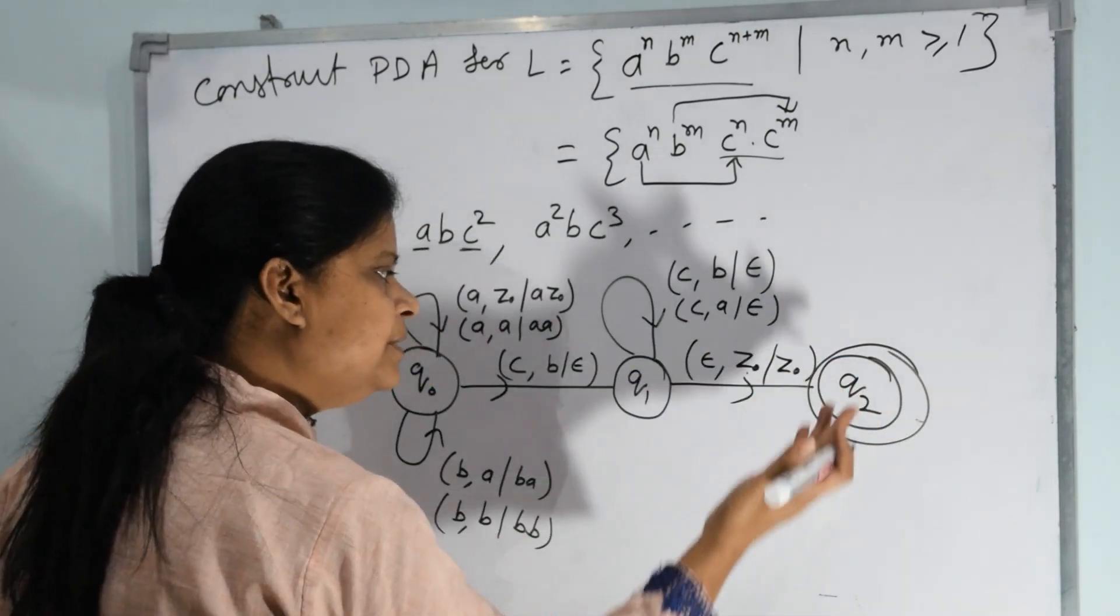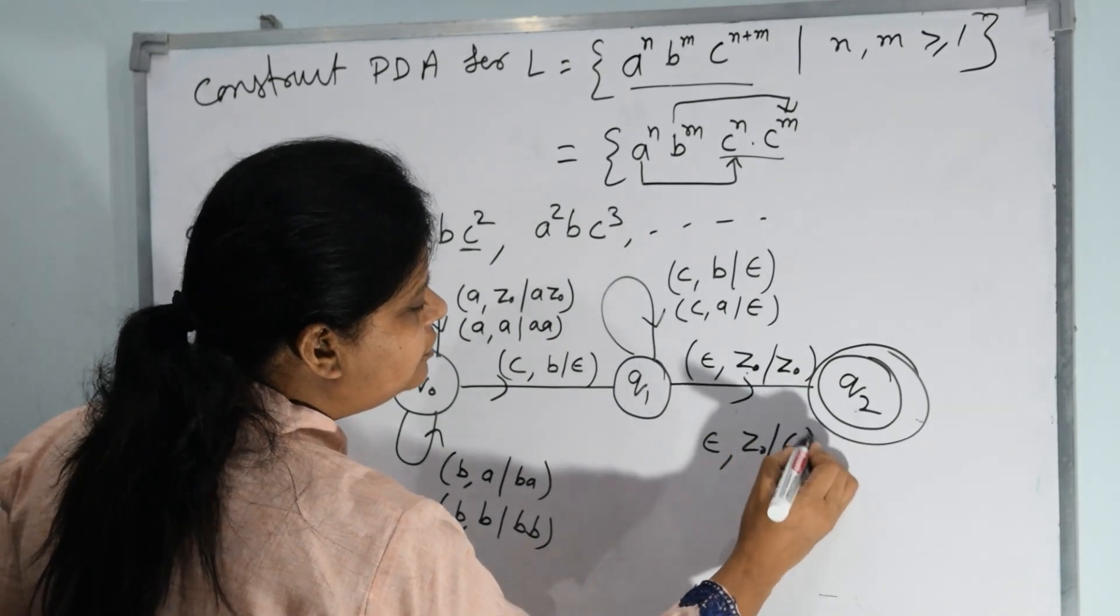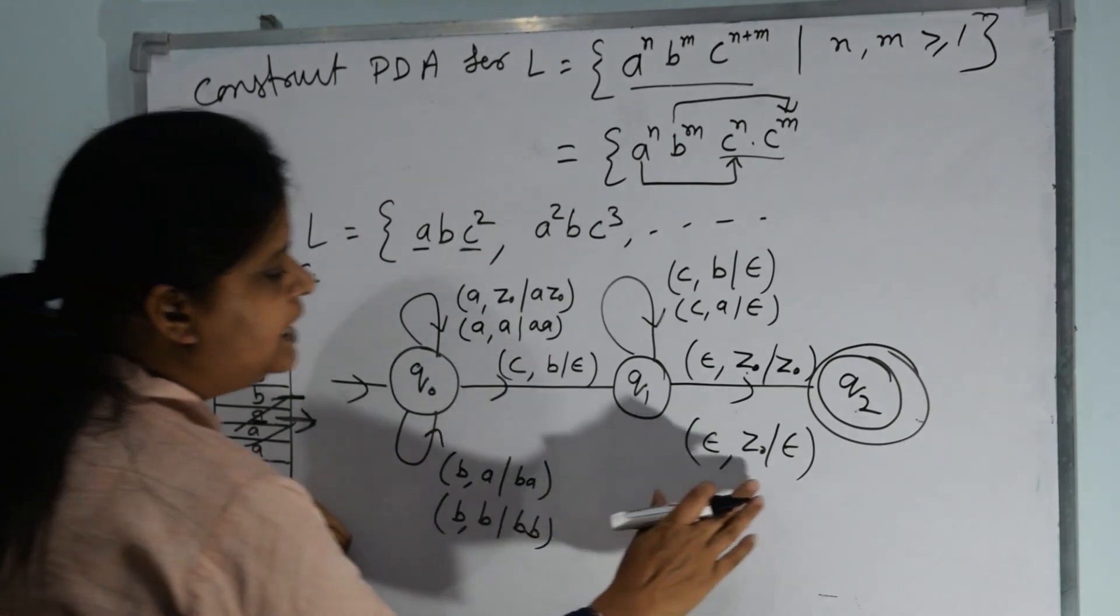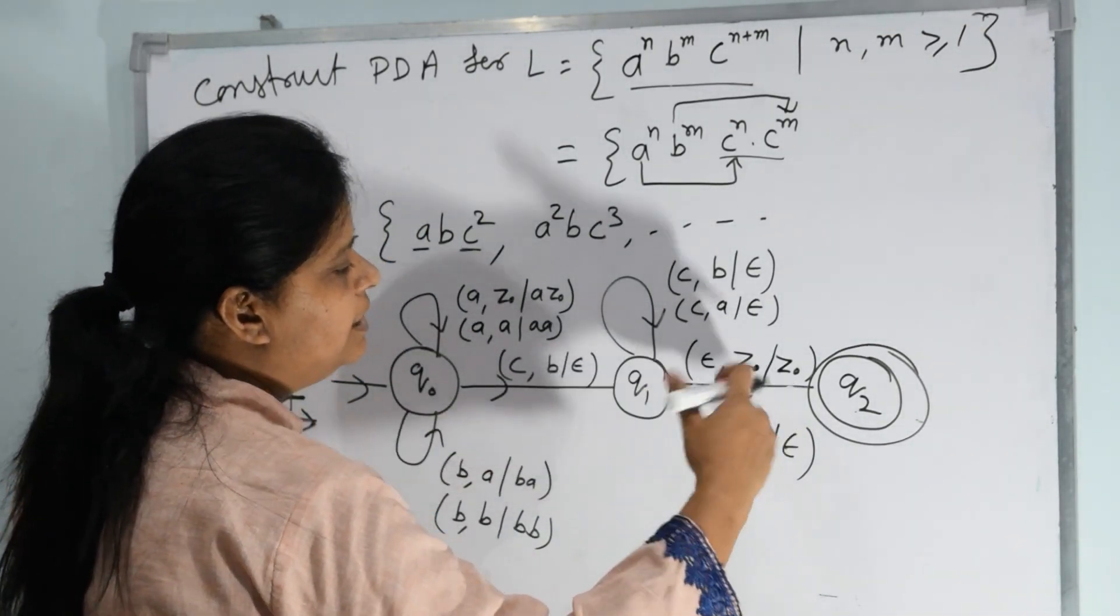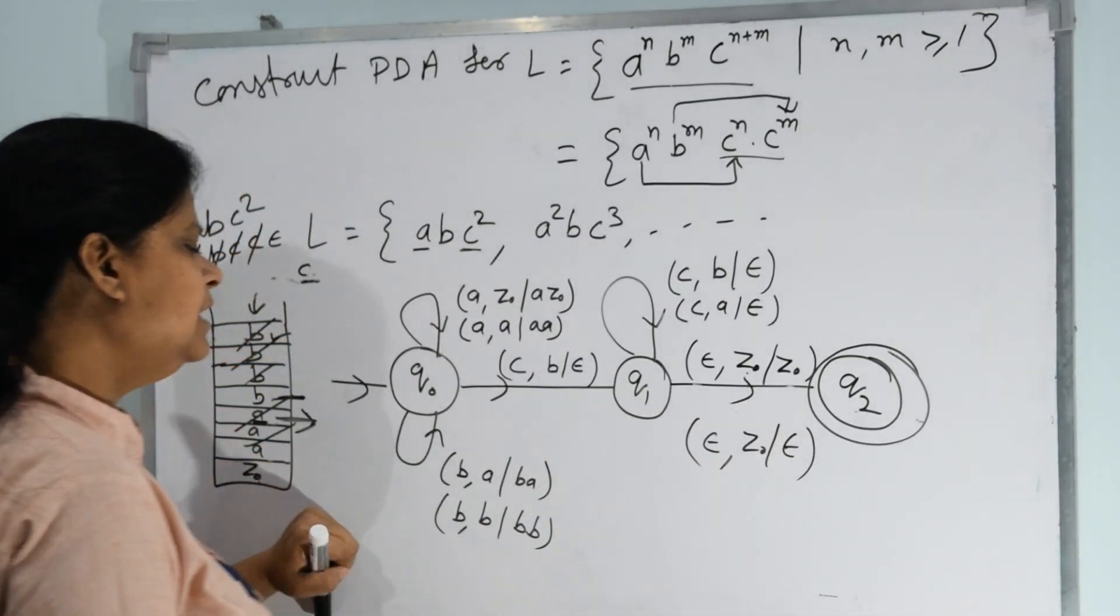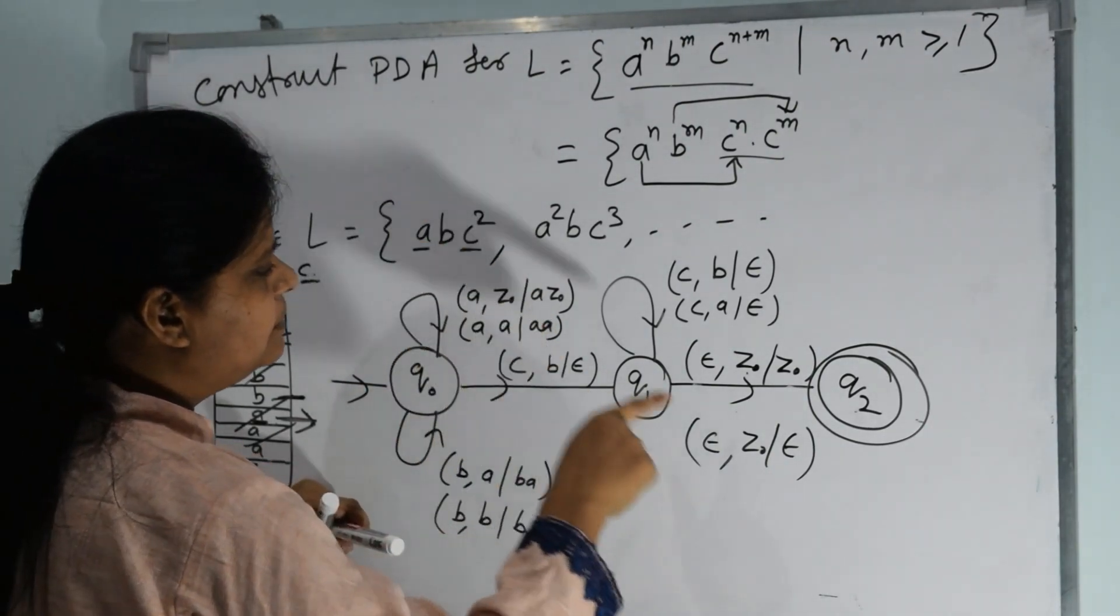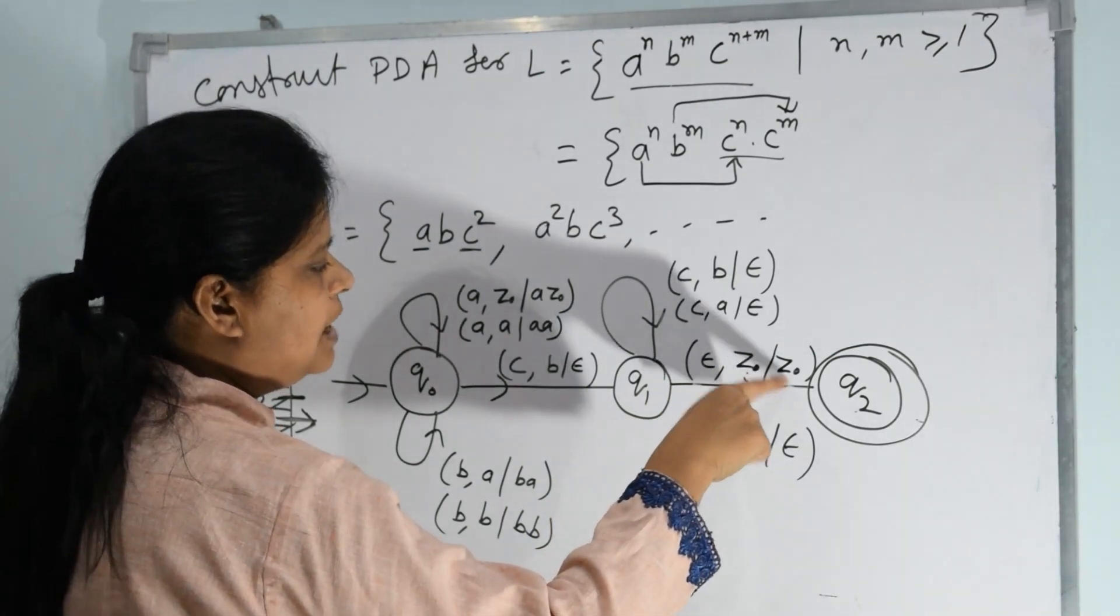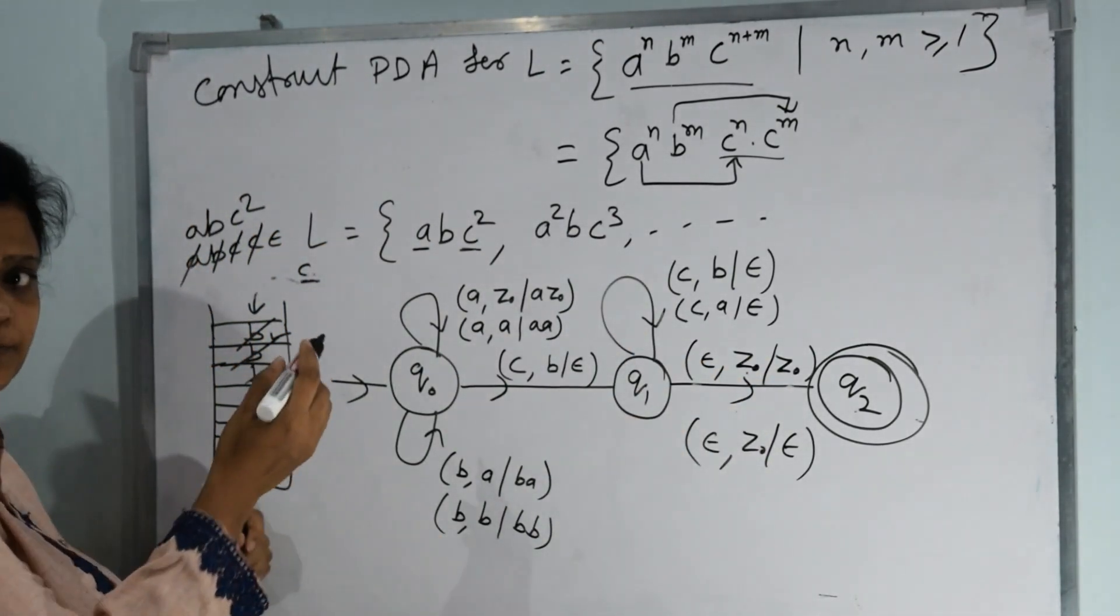Where will our final state be? Or instead of, if you also want to remove the stack, then instead of that you can write here z0. And if you also remove z0, then also this will be the final state. This is null acceptance PDA and this is final state. If we take this state, then this is final state acceptance. And if we take the lower one, then that is called null acceptance. So you can take any one. It depends on what's in the question paper. If they're asking for null acceptance, then this state will be there. If they're asking for final state, then you can write this. So this is the final answer here for this problem.